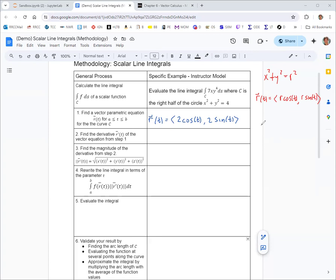So just take the derivative of each component with respect to t, the parameter. The derivative of 2 cosine t with respect to t is negative 2 sine t, and the derivative of 2 sine t with respect to t is 2 cosine t.